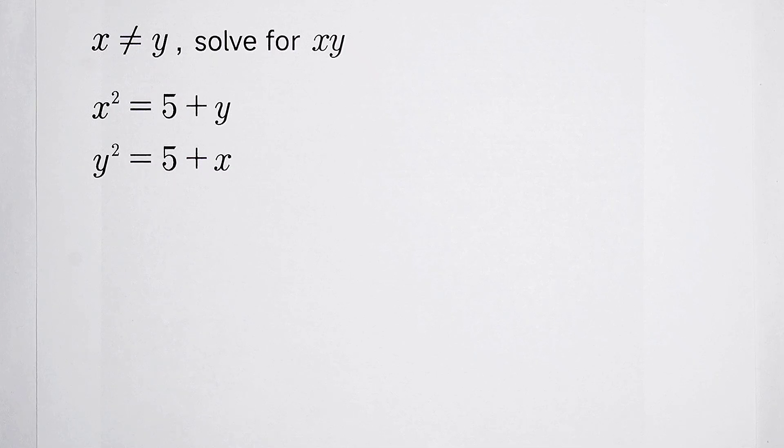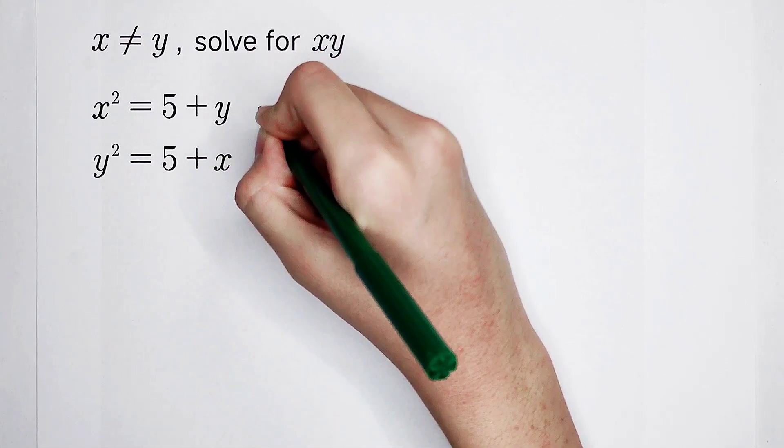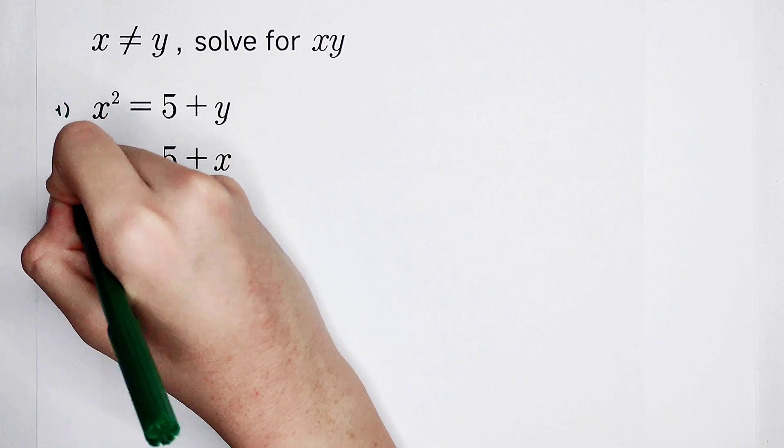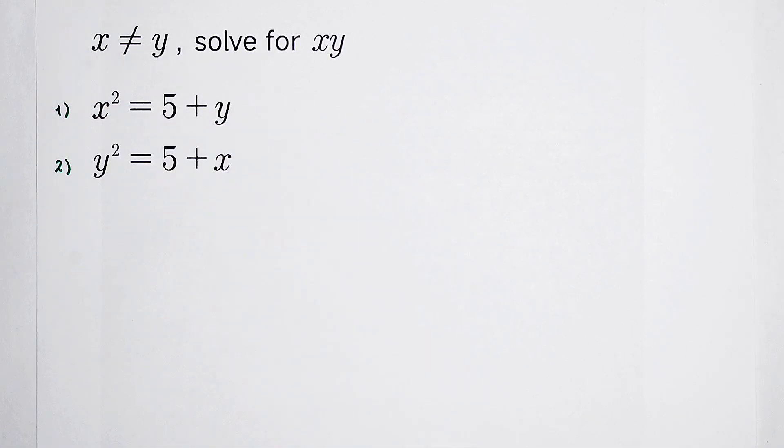So, our first step should be, if we can sort these two equations, maybe this is the first equation, this is the second equation. Our first step should be, let these two equations be subtracted.